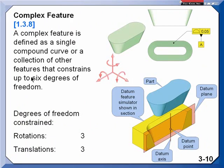Now a complex feature could be some very complex curve that could constrain all six degrees of freedom or it could be something as simple as this shape which also constrains all six degrees of freedom.